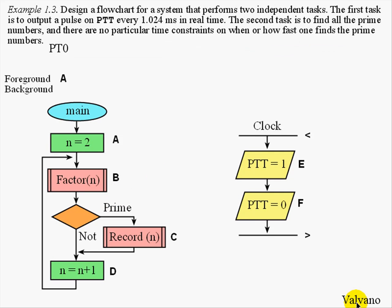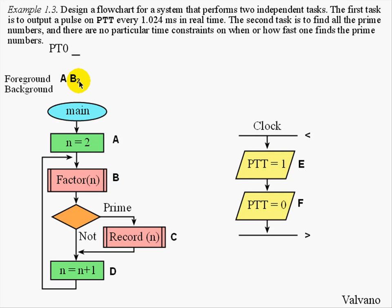In order to understand the execution pattern of this system, we will create a profile. This profile will have two components: what the foreground is doing and what the background is doing. The system begins with the foreground executing main. The letter A signifies that step A in the main program is executed. The next thing that happens is the foreground executes step B, showing the position of the software being executed, which is B, and the number being processed, which is 2.